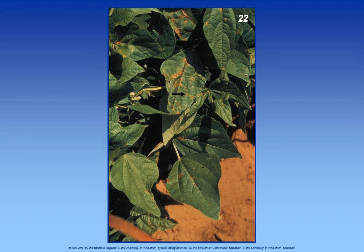The disease shown in this particular slide is called bacterial brown spot. It's a disease that's near and dear to my heart because this is the disease that I studied for my PhD work. The bacterium that causes this disease is called Pseudomonas syringae pathovar syringae, and it's what's called an ice-nucleating organism. Bacteria have a bacterial chromosome with a membrane around it and an outer wall. In this particular bacterium, there's also an outer membrane, and embedded in that outer membrane is a protein that mimics an ice crystal.